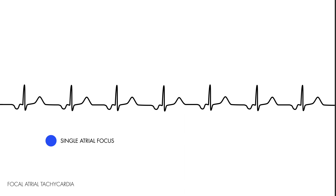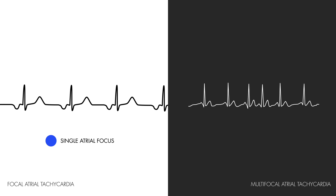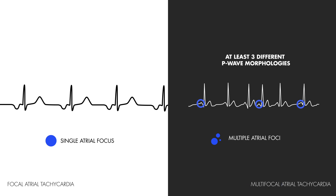And finally, and maybe most similarly, in multifocal atrial tachycardia you will, by definition, find P-waves with at least three different morphologies, representing multiple sites of atrial depolarization, hence the name multifocal atrial tachycardia. This differs from focal atrial tachycardia, where there is only one area of atrial depolarization.